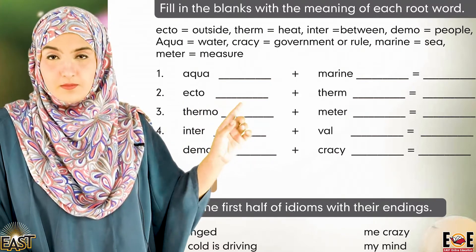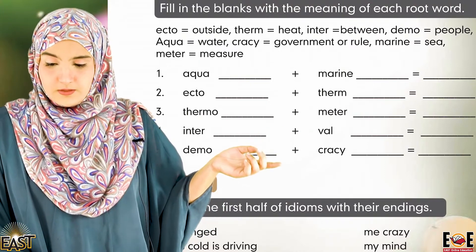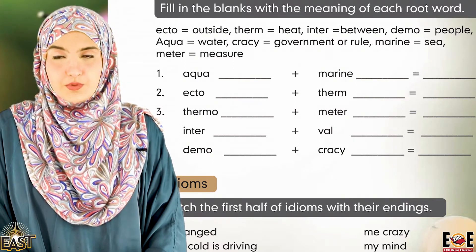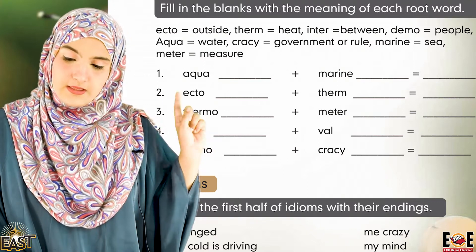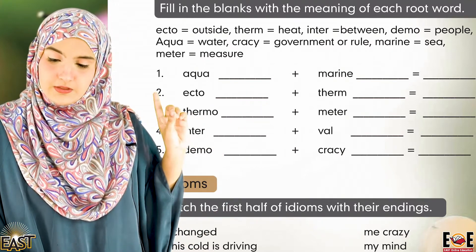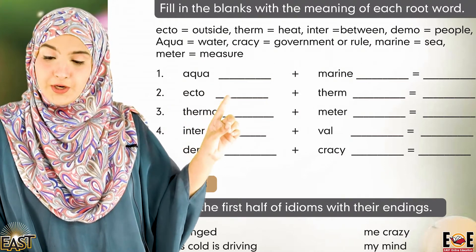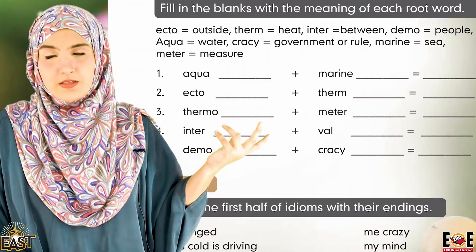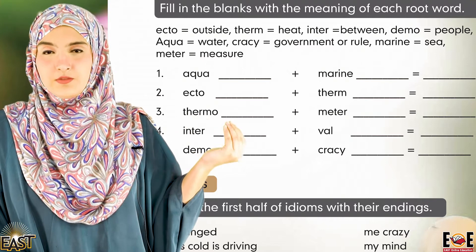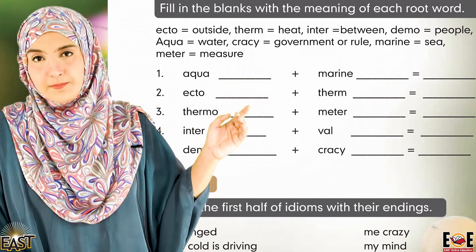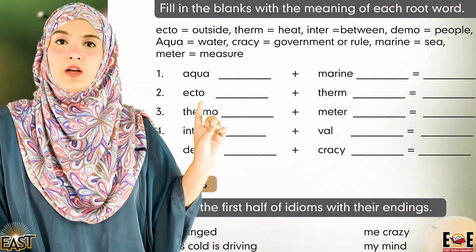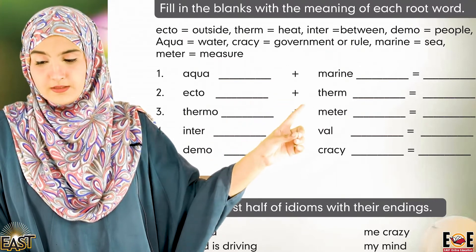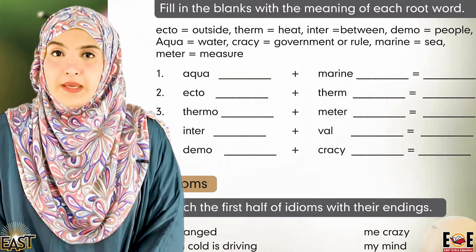Fill in the blank with the meaning of each root word. What do you think is the meaning of each root word? We have some root words here: 'eco' means outside, 'term' means heat, 'thermal' relates to heat energy. Also: 'inner' means between, 'demo' means people, 'equa' means water, 'crazy' means government or rule, 'marine' means sea, and 'meter' means measure.